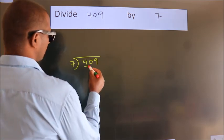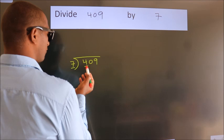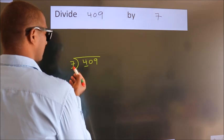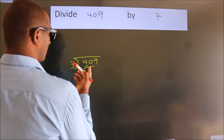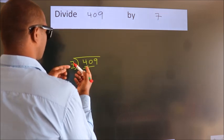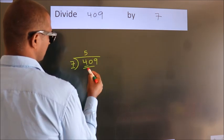Next, here we have 4, here 7. 4 is smaller than 7, so we should take two numbers, 40. A number close to 40 in 7 table is 7 fives, 35.